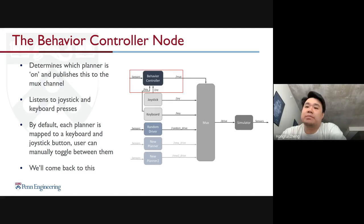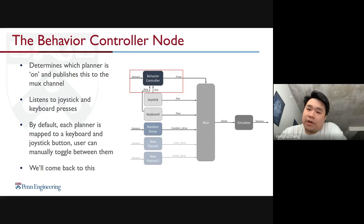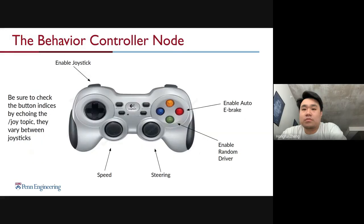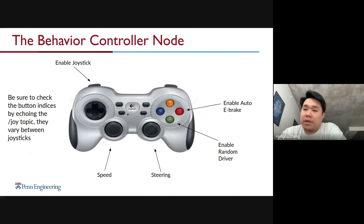The behavior controller node determines which planner is on and publishes this to the Mux channel. It also listens to joystick and keyboard presses in order to switch between channels. By default, each planner is mapped to a keyboard and joystick button, and the user can manually toggle between them. We've set up the joystick to have several functionalities, and you can see the key mapping here.